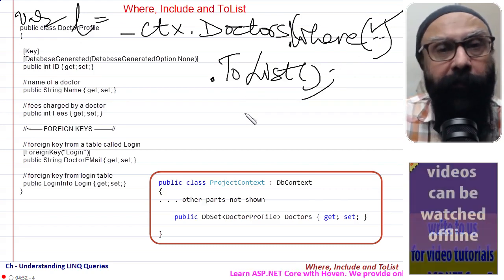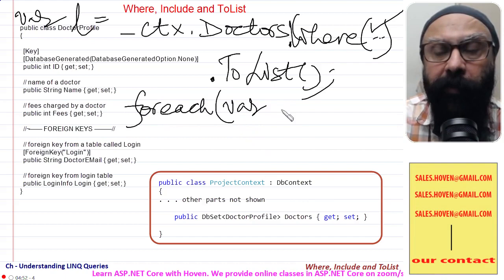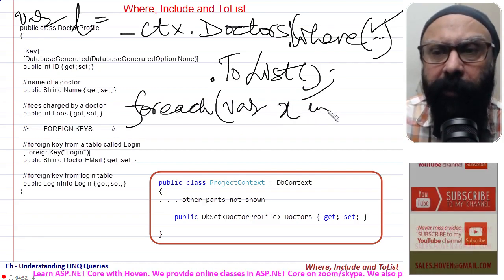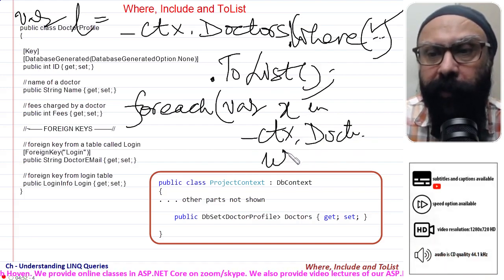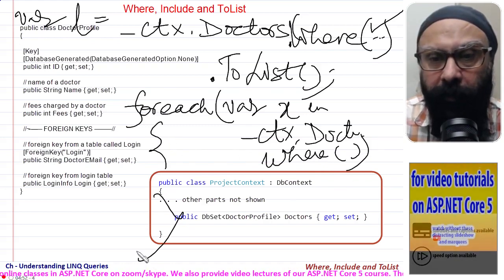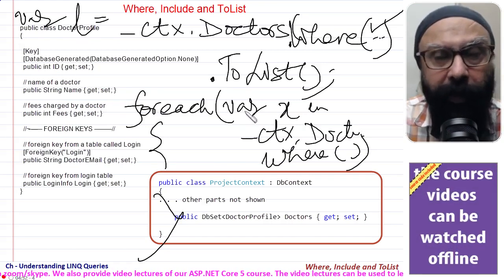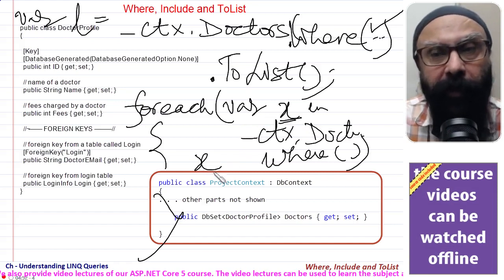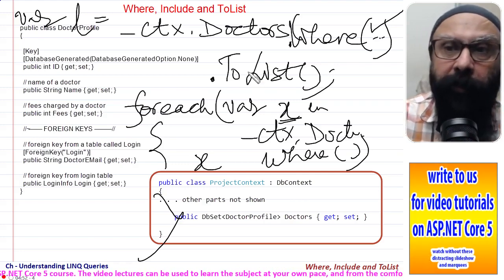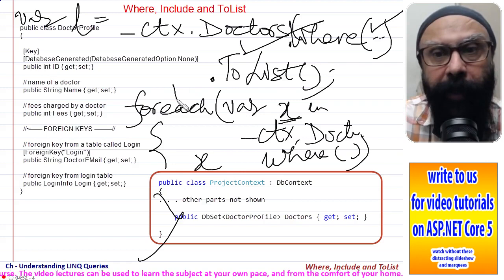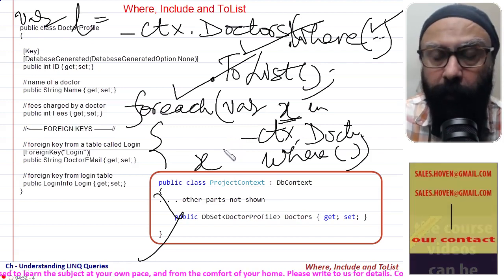There is another way of executing the query also. One way is to write a foreach, where any variable, where I'll say x in ctx dot Doctors dot Where. So where x in ctx dot Doctors dot Where, this will also execute the query and you will get x as the DoctorProfile object on each iteration of this query. The important thing that I am stressing is that query execution occurs here and here. You can use either of them depending on the requirement.